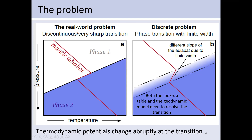This different slope only occurs exactly on the line where both phases are present; above or below we have a completely different slope of the adiabat. In a numerical model we can't have an infinitely thin phase transition — we have a discrete width caused by the finite resolution of the geodynamic model and also the finite resolution of the lookup table. In the best case, we get a phase transition with a finite width where the adiabat slope changes correctly, but if it is not resolved properly, we compute a completely wrong slope and the temperature on the other side of the phase transition would be entirely wrong.